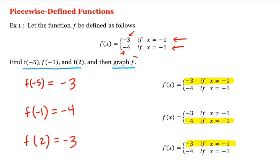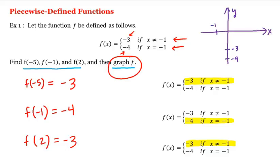So it remains for us now to graph f. Let's say that this is the y-axis, and this is the x-axis. And let's say that this is negative 1, and this is negative 3, and this is negative 4. As long as x does not equal negative 1, f of x, or y, is equal to negative 3. And y equal to negative 3 is the equation of this horizontal line here. However, when x is equal to negative 1, we have an open circle, because when x is equal to negative 1, the y value is negative 4. So this would be the graph of f.